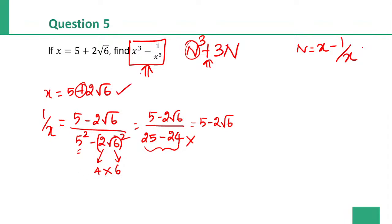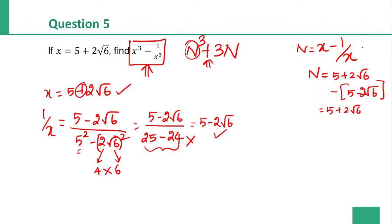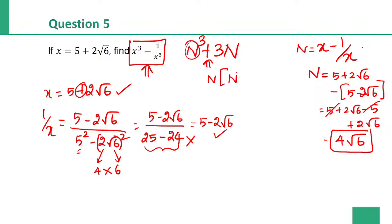x value is 5 plus 2 root 6, 1 by x value is 5 minus 2 root 6. For x minus 1 by x: 5 plus 2 root 6 minus of 5 minus 2 root 6. Plus 5 minus 5 cancel. 2 root 6 plus 2 root 6 will be 4 root 6. So x minus 1 by x, that is n value, is 4 root 6.